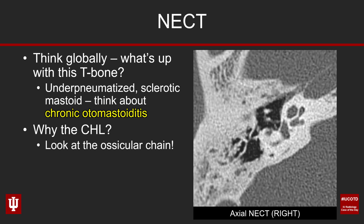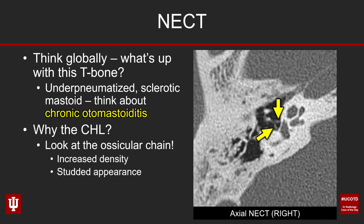Now take a look at the ossicular chain. We see the long process of the malleus, down into the lenticular process of the incus, and the anterior and posterior crura of the stapes. When you look at this ossicular chain, it's too dense, and in fact that density has a bit of a studded appearance. Look at the anterior and posterior crura of the stapes — you can see these tiny dots of increased density. As Rick Wiggins likes to say, this patient looks like they have sprinkles on their ice cream cone. Now let's look at the long process of the incus transitioning into the lenticular process: it's too dense, thickened, a bit smudgy, and surrounding it there may be just a little bit of inflammatory soft tissue as well.